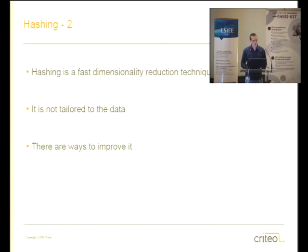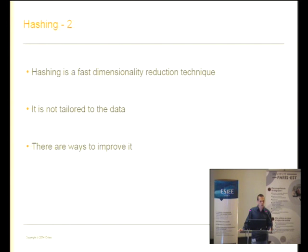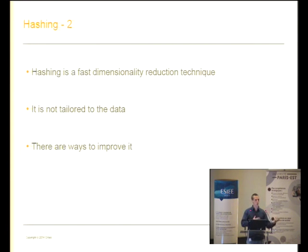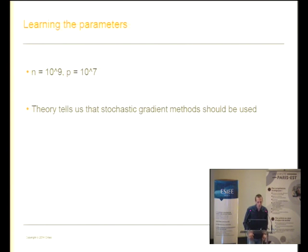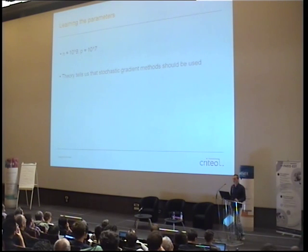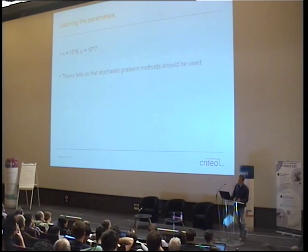You quickly realize there's an issue: the current URL means the model needs one parameter for every possible URL on the web. We don't have as many data points as there are combinations of URL, advertiser, and time since last visit. So we use hashing. Hashing is a fast dimensionality reduction technique — unlike PCA or other supervised dimension reduction methods which are too slow in real time. Hashing is not tailored to the data but is super fast, almost directly implemented on CPUs, and much more efficient than matrix-vector products used in standard linear dimensionality reduction.